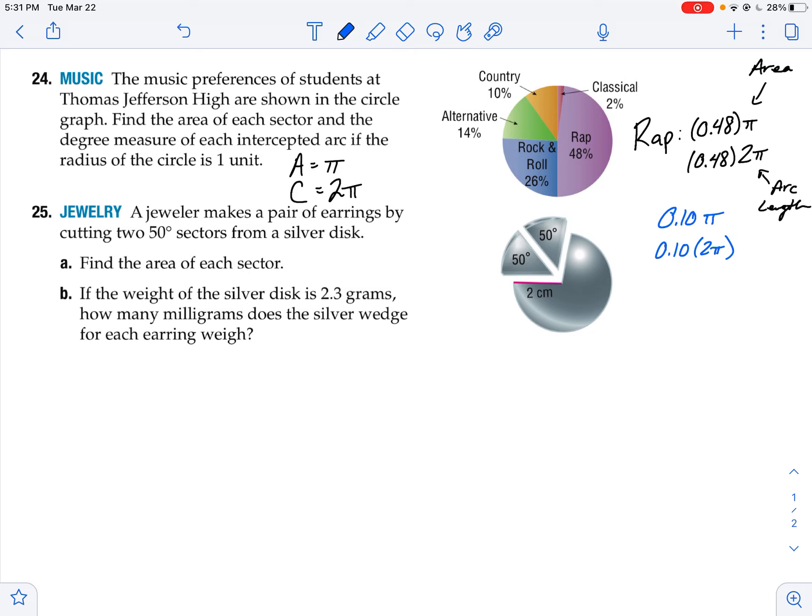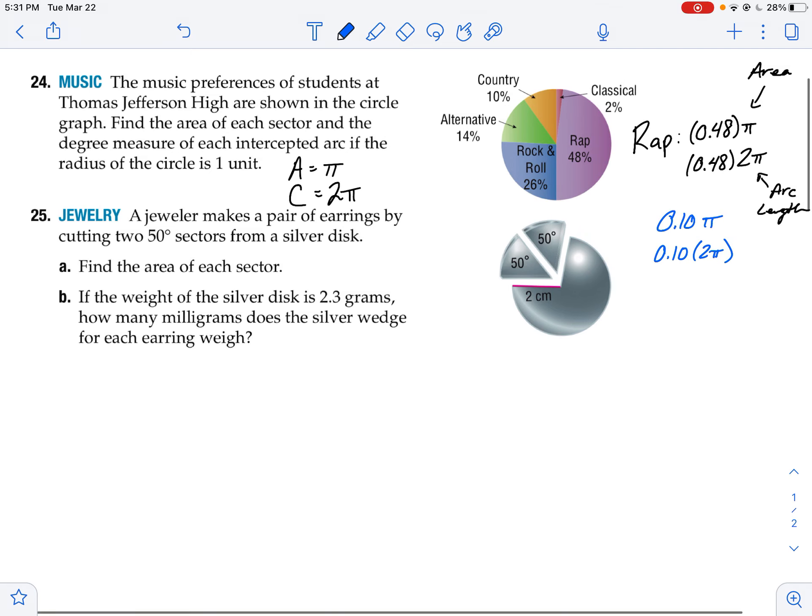On 25, a jeweler makes a pair of earrings by cutting two 50 degree sectors from a silver disc. Now I'm looking at degrees and not percents. So here I want the area of each sector. I need to figure out what the area is. So it would be 2 pi r for the circumference, but I don't want circumference. I want area. I want pi times r squared, or 4 pi. So the area is 4 pi for the whole thing.